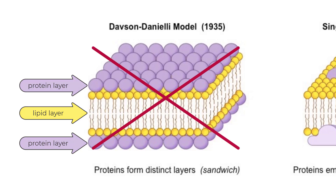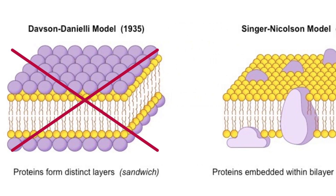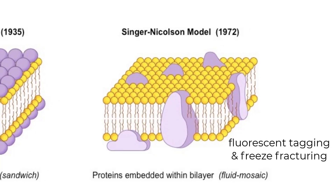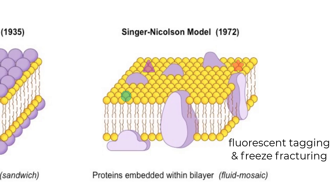Today we know that this model is incorrect, and it was disproven by Seymour Singer and Garth Nicholson in the 1970s. They used techniques like fluorescent tagging and freeze fracturing to create a new understanding of the cell membrane. Tagging proteins with fluorescent markers showed that membrane proteins were mobile, meaning they did not sit in a solid layer. This questioned the original model that had two separate layers of proteins with a consistent ratio. Additionally, freeze fracturing allowed them to split the membrane in half and view the internal components, which was not as uniform as the original model. They found proteins were also inside of the membrane, between the lipids, viewed as irregular rough surfaces.